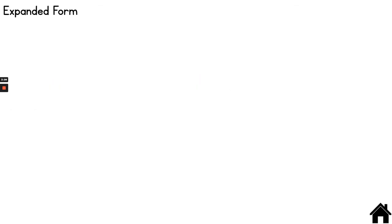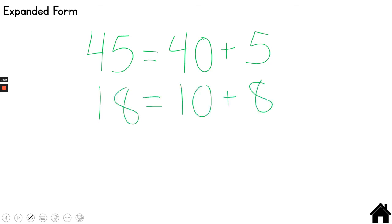With my expanded form I'm going to expand my numbers out. 45 is 40 plus 5. 18 is 10 plus 8. From here I can add my tens and ones. 5 plus 8 is 13. 40 and 10 is 50. If needed I can expand 13 into 10 and 3. 50 and 10 is 60. Plus 3 more is 63.